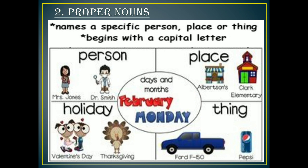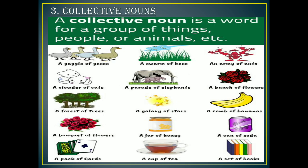Proper noun names a specific person, place, or thing and it always begins with a capital letter — whether it comes at the beginning of a sentence or in the middle of a sentence, it will always start with a capital letter. Like Dr. Smith, or the example of Ghaziabad — we never write a small 'g' in Ghaziabad, we always write capital 'G'. So in proper noun we always write it with a capital letter because it names a specific person, place, or thing. Next, a collective noun is a word for a group or collection, as explained earlier — when we talk about a collection of any noun, it's called a collective noun.